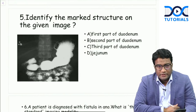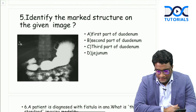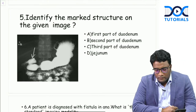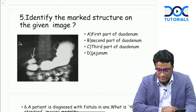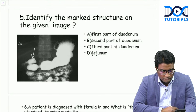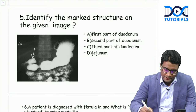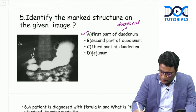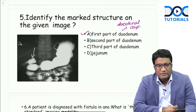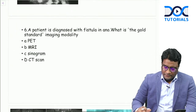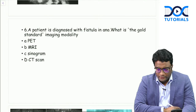There were two to three questions on barium studies. One showed an arrow on an image asking: is it the first, second, or third part of duodenum, or jejunum? The answer was the first part of duodenum, which forms the duodenal cap or duodenal bulb. I hope you got that right - the first part of duodenum.